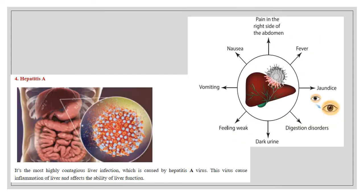The second example is hepatitis A. In hepatitis A, there is a liver infection caused by the hepatitis A virus. The symptoms include pain in the right side of the abdomen, fever, joint pain, digestion disorders, dark-colored urine, weakness, vomiting, and nausea.